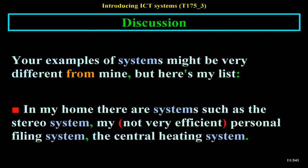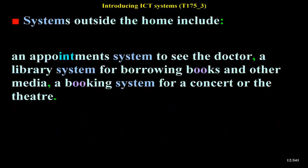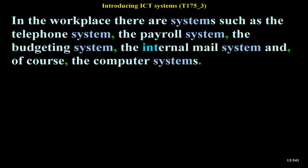In my home there are systems such as the stereo system, my not very efficient personal filing system, and the central heating system. Systems outside the home include an appointment system to see the doctor, a library system for borrowing books and other media, and a booking system for a concert or the theater. In the workplace there are systems such as the telephone system, the payroll system, the budgeting system, the internal mail system, and of course the computer systems.